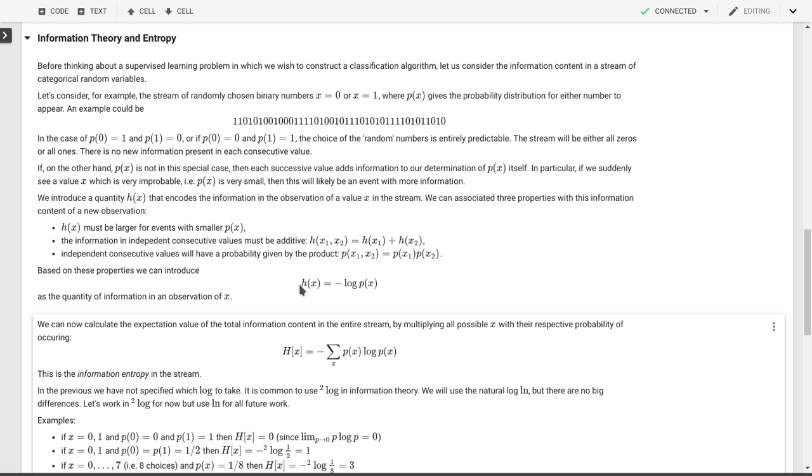So this is the information content. Little h is the information content encoded in a single observation of x. Each one of those digits in this stream here will have its own h, you know, there's going to be the h of one for that first one, then there's an h one for the second one, there's an h zero and h one.